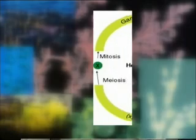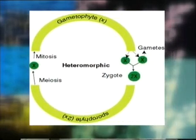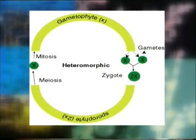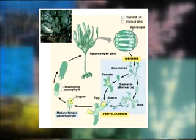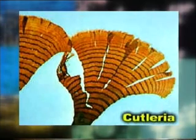Second is the heteromorphic or heterologous diplo-haplontic life cycle. It is that type of diplo-haplontic life cycle in which the two alternating diploid and haploid individuals are morphologically very dissimilar or different. In this type of life cycle, either the gametophyte or the sporophyte is more developed or complex in structure. For example, in Laminaria, the sporophyte is highly developed than the gametophyte, while in Cutleria, the gametophyte is having more elaborate development than the sporophyte.